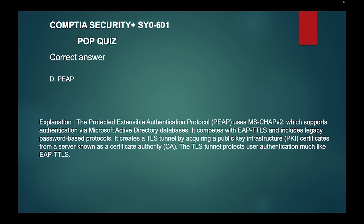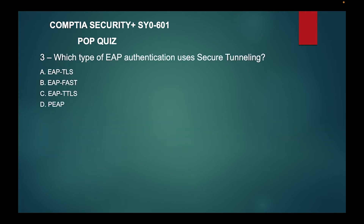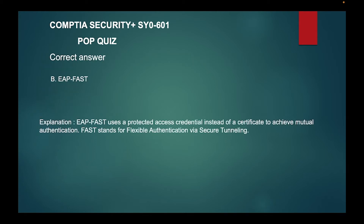Question three: which type of EAP authentication uses tunneling? Is it A, EAP-TLS; B, EAP-FAST; C, EAP-TLS; or D, PEAP? The correct answer is B, EAP-FAST. Its main purpose uses a protected access credential instead of a certificate to achieve mutual authentication. FAST stands for Flexible Authentication via Secure Tunneling.